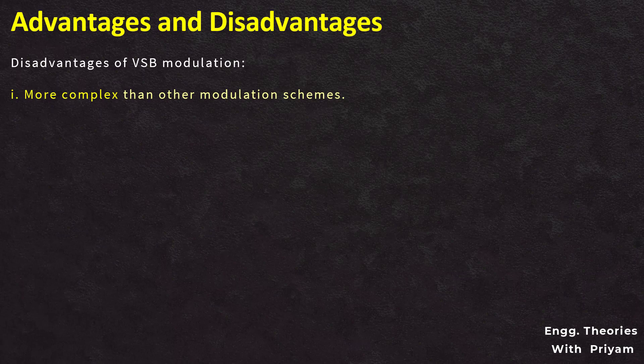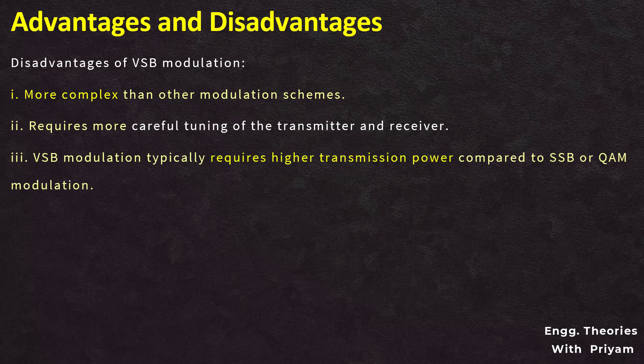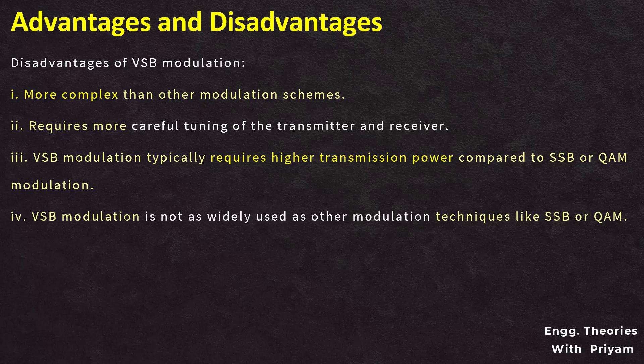The disadvantages of VSB modulation include that it is more complex than other modulation schemes and requires more careful tuning of transmitter and receiver. VSB modulation typically requires higher transmission power compared to SSB and QAM to achieve similar levels of information transmission. This increased power consumption can be a concern in battery-operated devices. VSB is not as widely used as SSB or QAM, which can lead to compatibility issues.